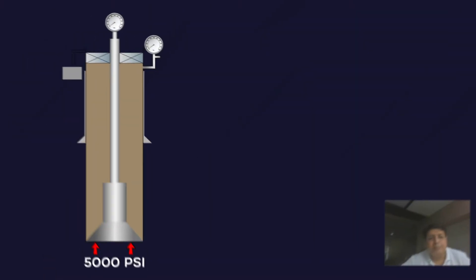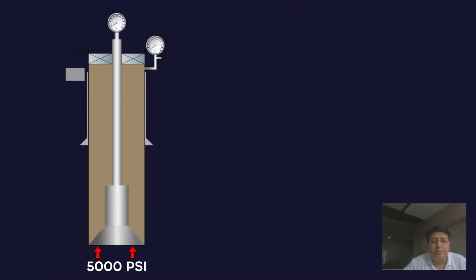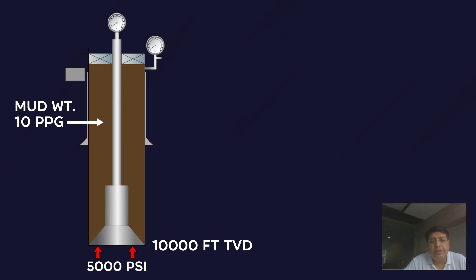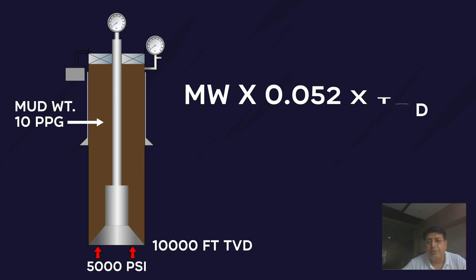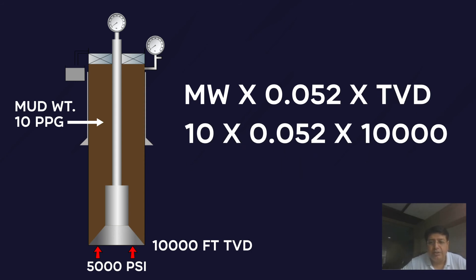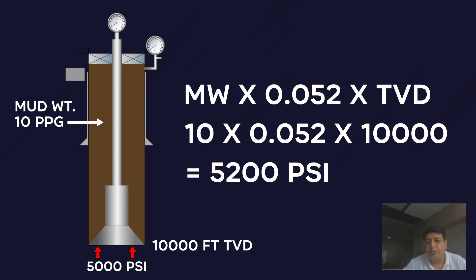Let's take an example. A well depth of 10,000 feet TVD and mud weight of 10 ppg. The pressure exerted by this mud at rest is called hydrostatic pressure. To calculate it, we use the formula: mud weight times a constant times the level of mud or true vertical depth. Putting in the values gives us 5,200 psi. This means that 5,200 psi is the pressure of the mud column acting downwards and balancing the formation pressure.